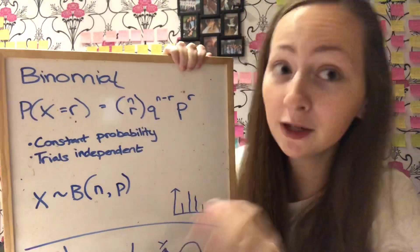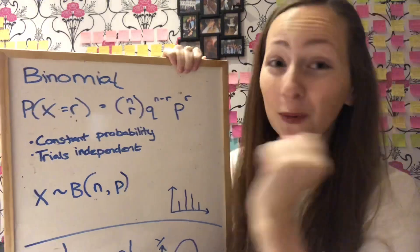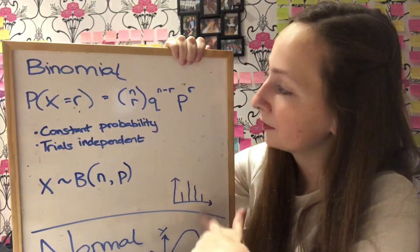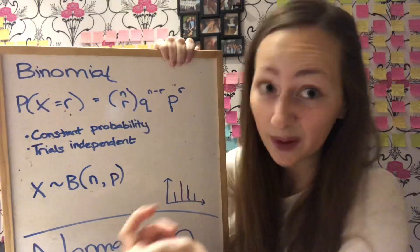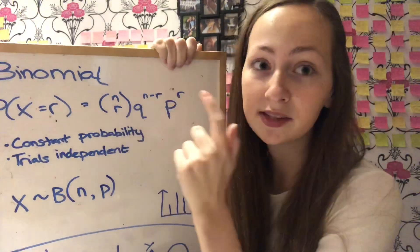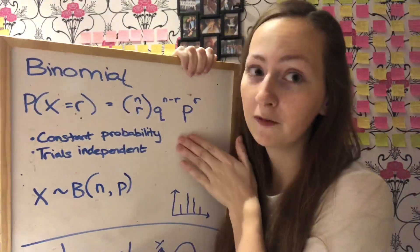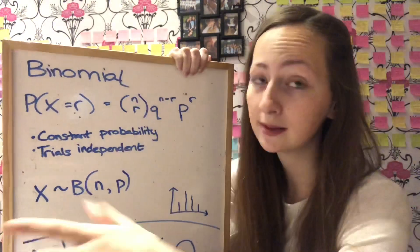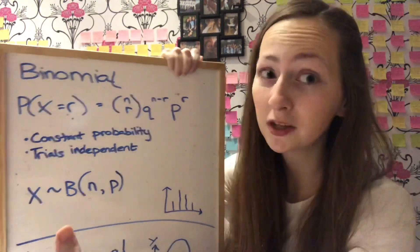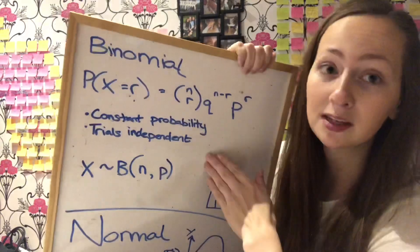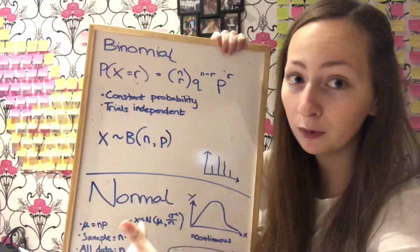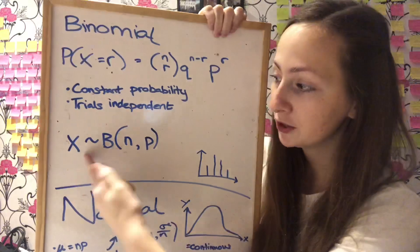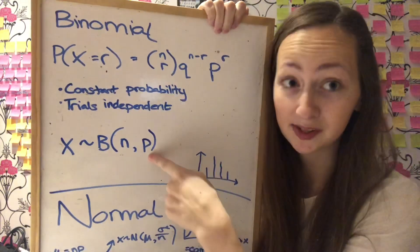So with the binomial distribution, it's just this formula here, which hopefully you're familiar with. So obviously N is the number of trials, P is the probability, Q is 1 minus P, it's just the opposite of the probability. R is the number of successes. The trials are independent, constant probability, you also have that there's only two possible outcomes. But that's what we need to think about when we're comparing it to the normal. And then this is how you describe it. So you go X has the distribution for the binomial, the number of trials and the probability of success.